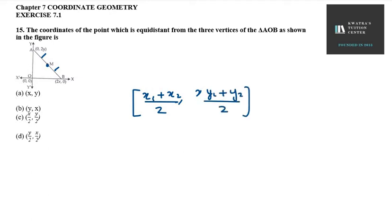Now, this formula is coming from your section formula. When you have M1 and M2 as 1, 1, then the formula is going to be converted.